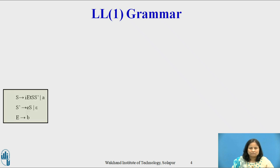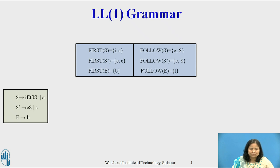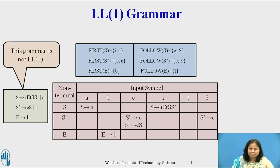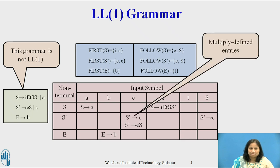Consider the grammar for dangling if with the productions: S derives i E t S S-dash or a; S-dash derives e S or epsilon; and E derives b. Looking at the first and follow sets and the parsing table, the parsing table has multiply defined entries, hence this grammar is not LL1. The entry for M[S-dash, e] contains both S-dash derives e S and S-dash derives epsilon, since follow of S-dash equals {e, $}. This grammar is ambiguous, and the ambiguity is manifested by a choice in what production to use when e (else) is seen.